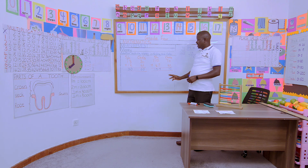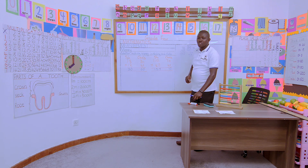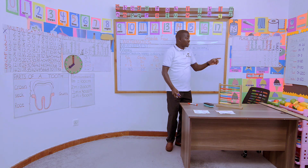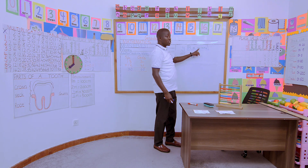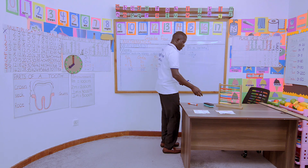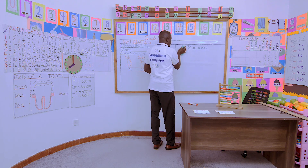Let us remember: regrouping is very key, alignment is very key. One shilling is equivalent to 100 cents. Now can we try the following task?